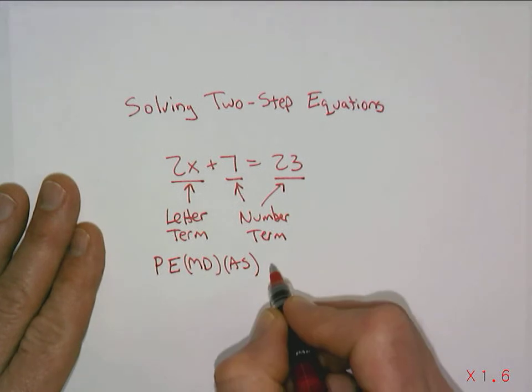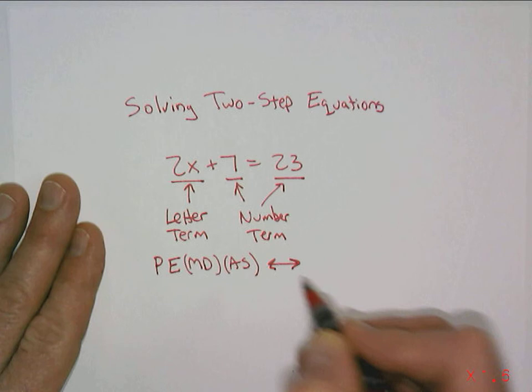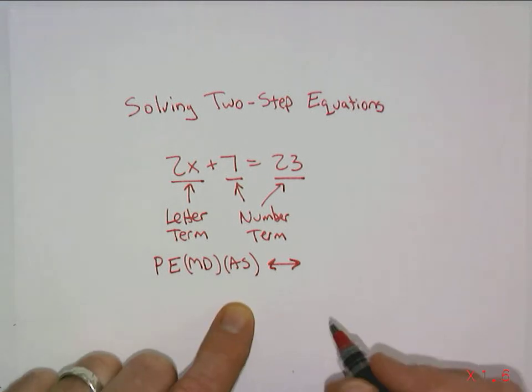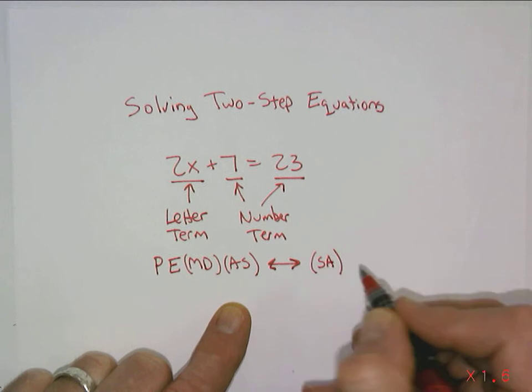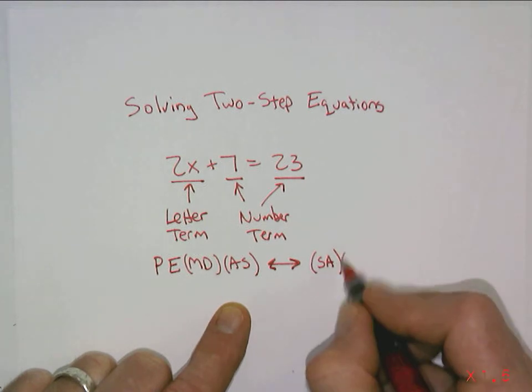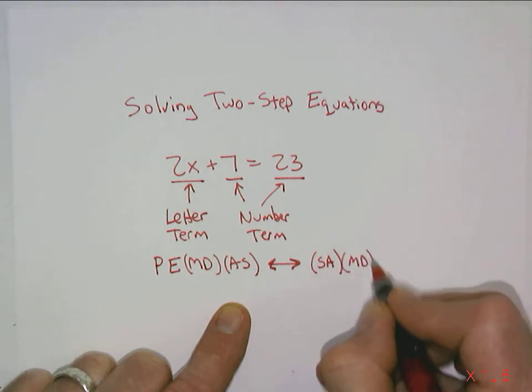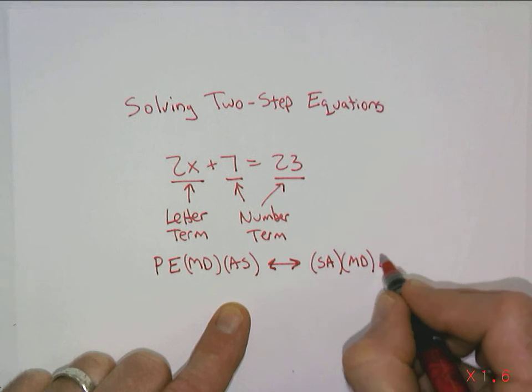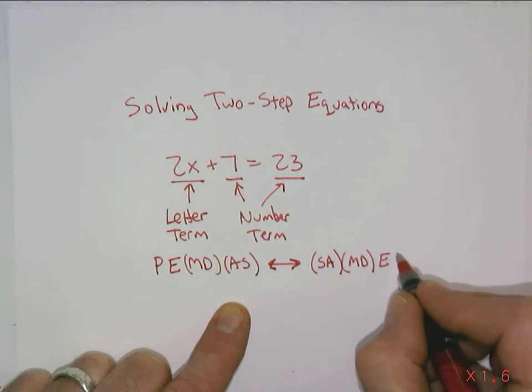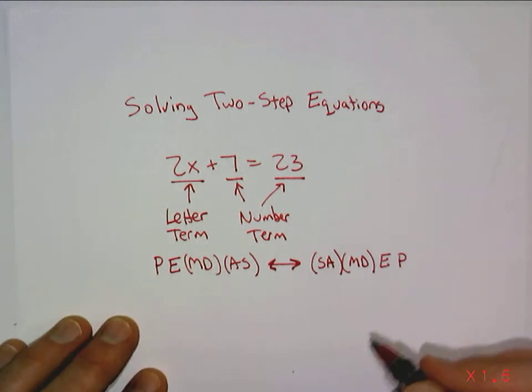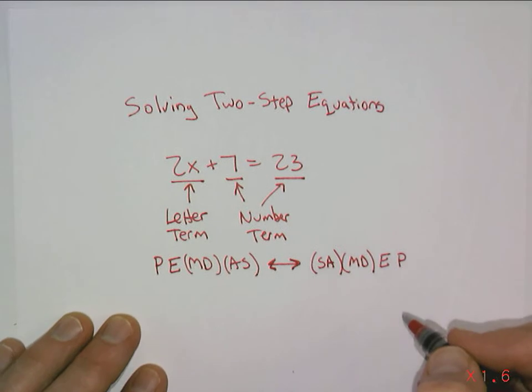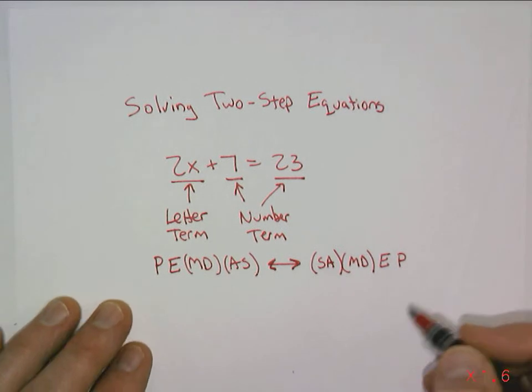When we solve equations we actually reverse that order. We think about subtraction and addition first, and then multiplication and division next. And then if there are exponents we would do those and then we would deal with parentheses last.